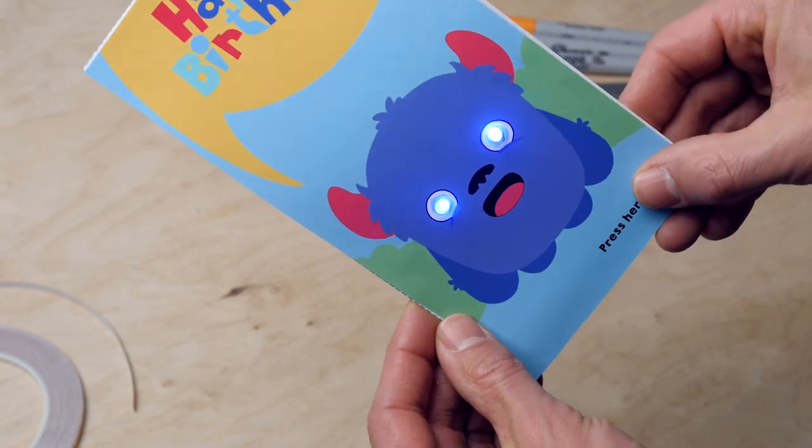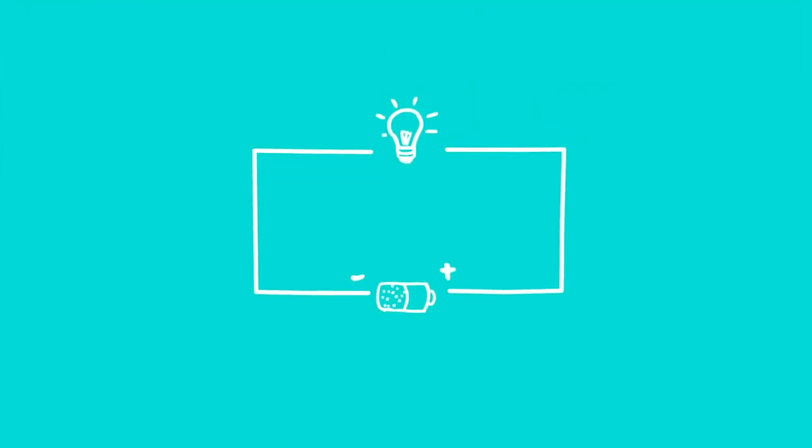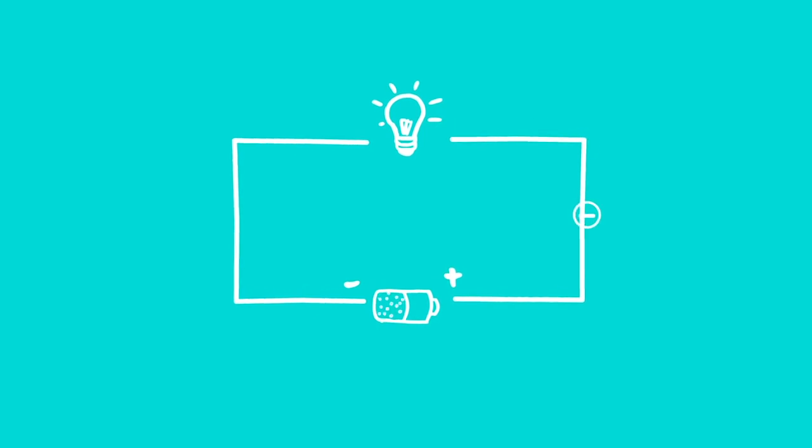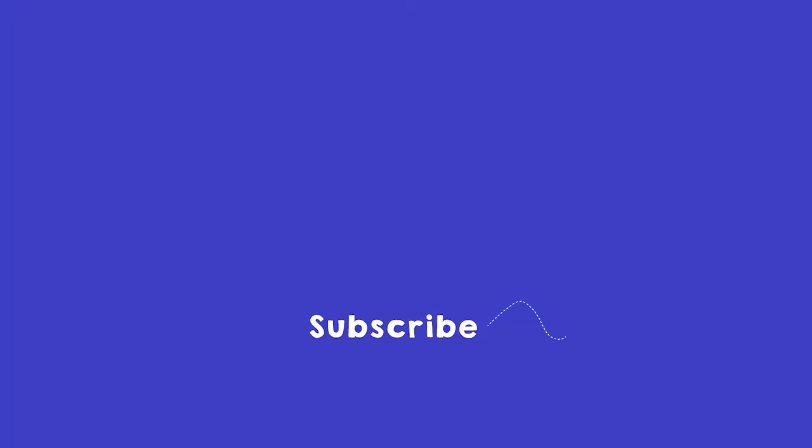All done. You've now discovered that electricity is a flow of electrons. You've also learned how you can design an electrical circuit in a flow diagram. Great that you joined us and see you at the next mission.